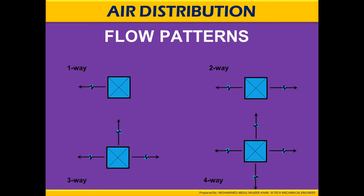Diffusers are classified into four patterns: one-way, two-way, three-way, and four-way, which simply indicate the direction of airflow. One-way diffusers direct air in only one direction, and by the name itself, two-way, three-way, and four-way indicate the number of directions in the air terminal's flow pattern.